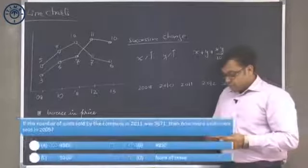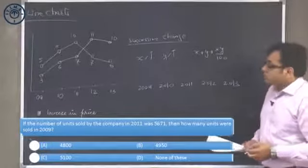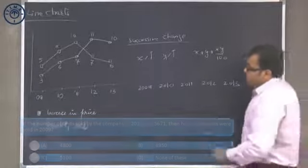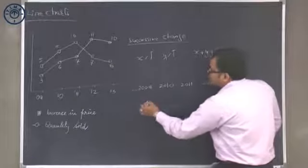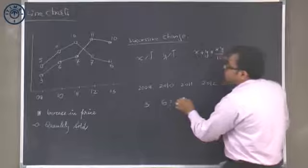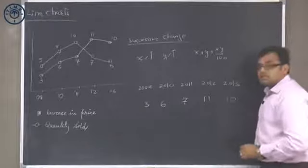If the number of units sold by the company in 2011 was 5671, then how many units were sold in 2009? If I look at the number of units sold: 3 percent, 6 percent, 7 percent, 11 percent and 10 percent, these are the percentage increases.